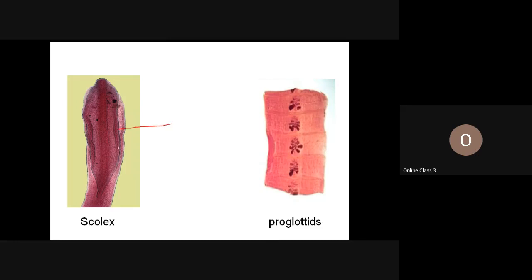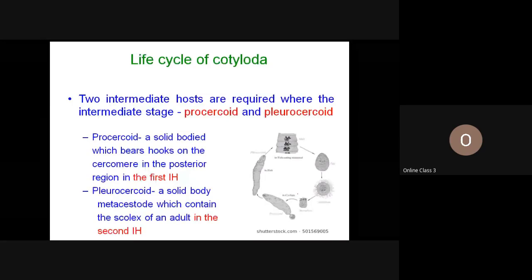To summarize the egg differences: trematode eggs are operculated; cestode eggs have six hooks or three pairs of hooks; pseudotapeworm (Cotyloda) eggs are also operculated. In Cotyloda, the female reproductive organs cluster together in the center of the proglottid in a rosette shape, which is unique and can be seen with the naked eye as a darkening or thickening chain-like structure.